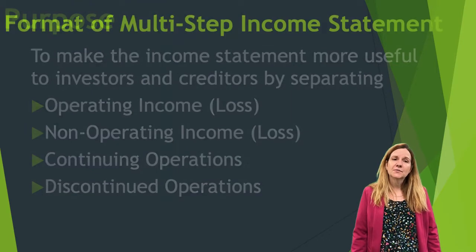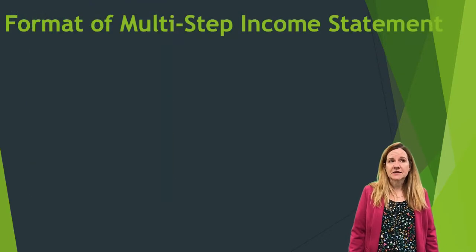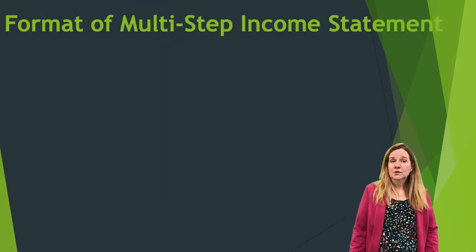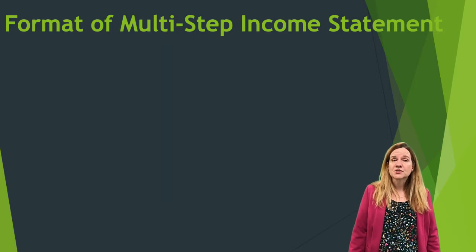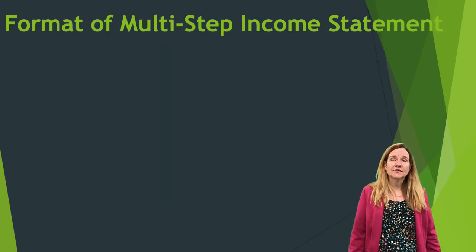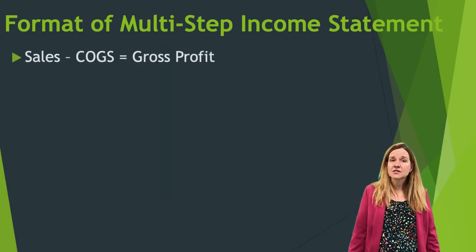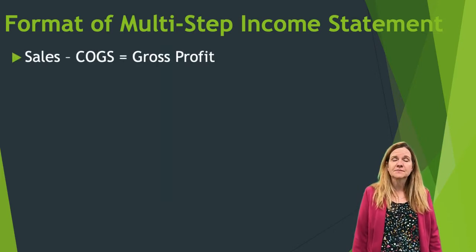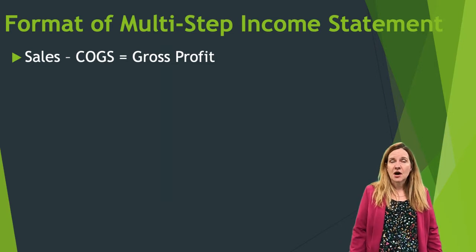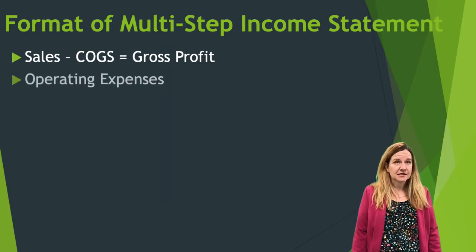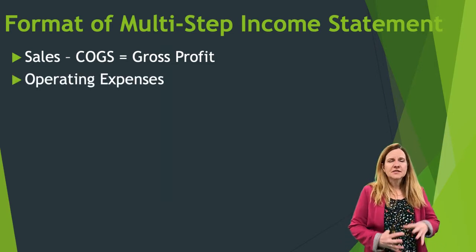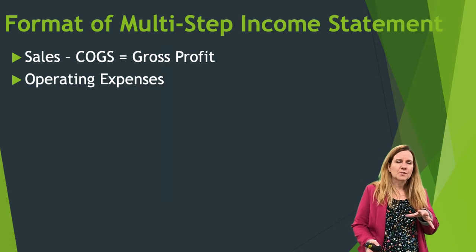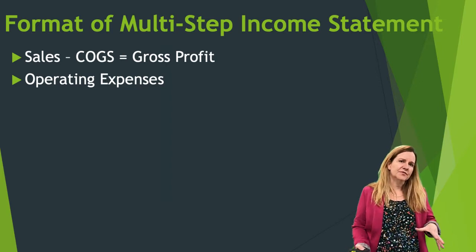The format of the Multi-Step Income Statement, if we're working with a manufacturing or merchandising company, has sales minus cost of goods sold to get to gross profit, and then all the operating expenses. It's very summarized, and this is the main format you'll see for publicly traded companies.